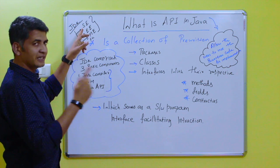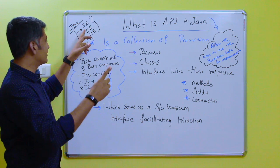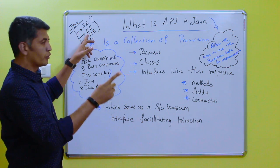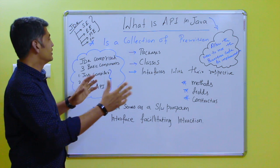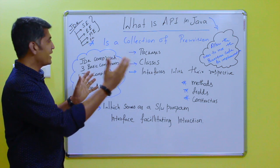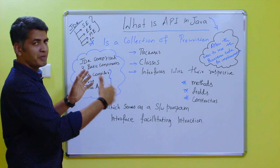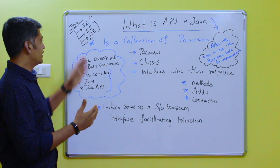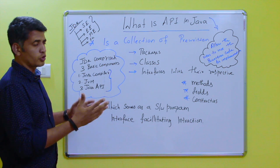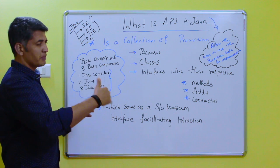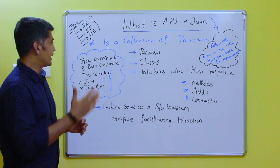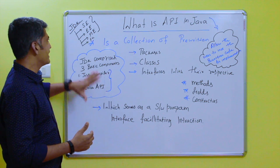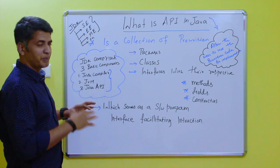For Standard Edition there is a different JDK and JVM, and for Enterprise Edition also there is a combination of JDK, JVM, and API available. For Micro Edition also JVM and API is available. So this is all about JDK and the platforms.